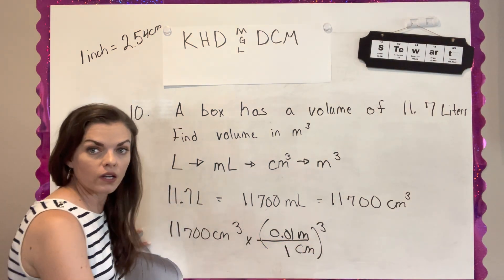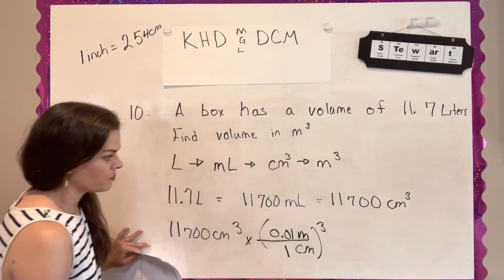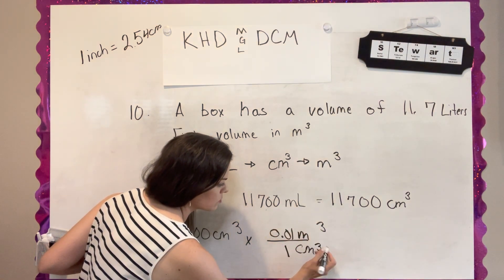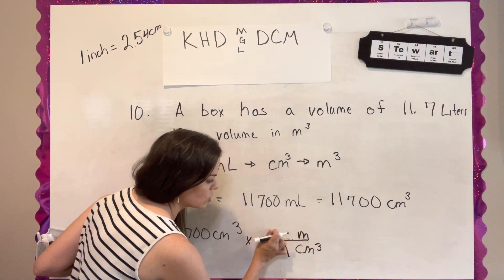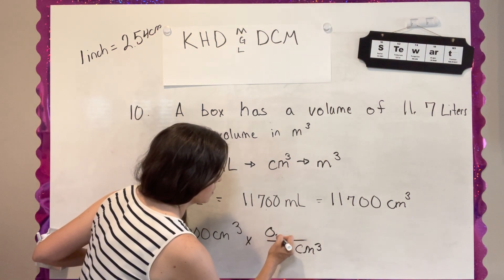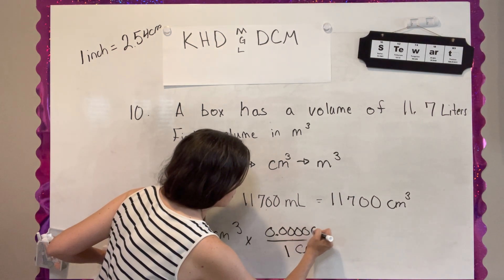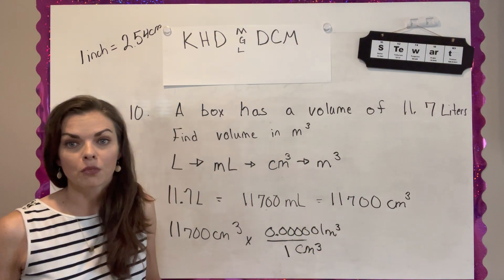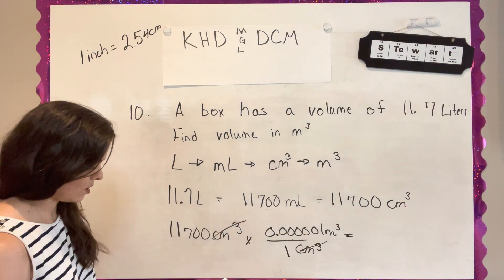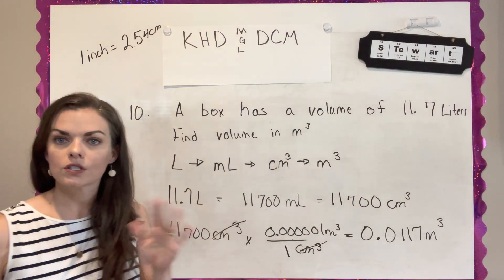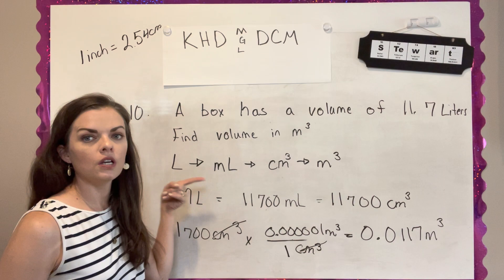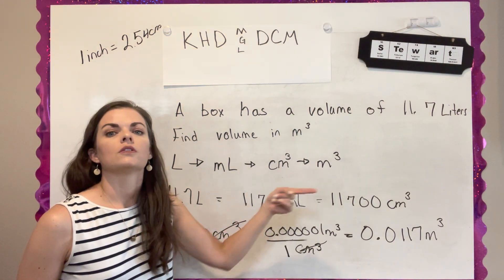So one centimeter is 0.01 meters. Now one cubed is one. That's pretty easy, right? So we're just going to cube each of these parts so I can show you what it looks like. So this becomes one centimeter cubed and I have to cube this 0.001 meter and you could just put that in your calculator if you want and you get a very small number and then the centimeters cubed cancels out and you get an answer of meters cubed. I know that's confusing. We're going to get more practice and get to see another one of these problems later on. Just in case you got lost, we went from liters to milliliters to centimeters cubed to meters cubed.